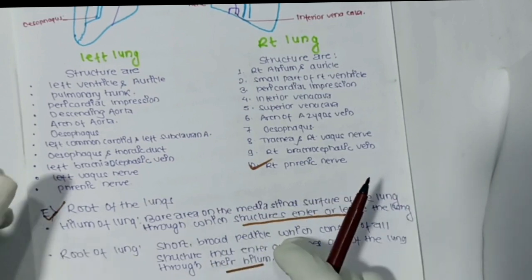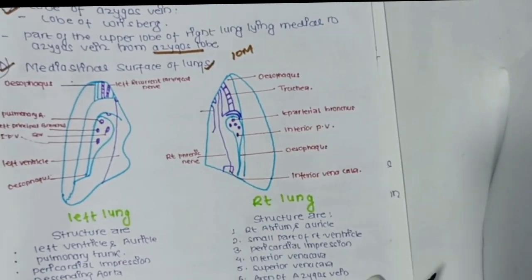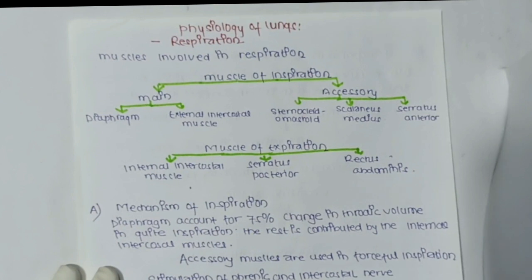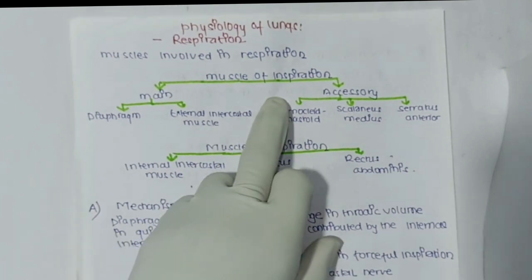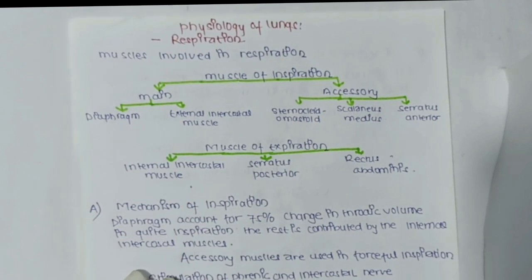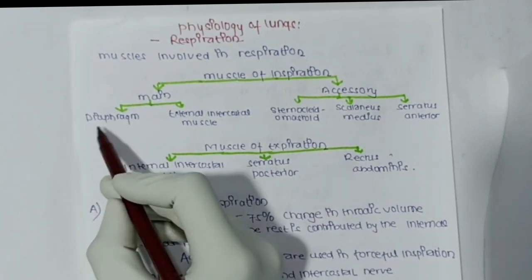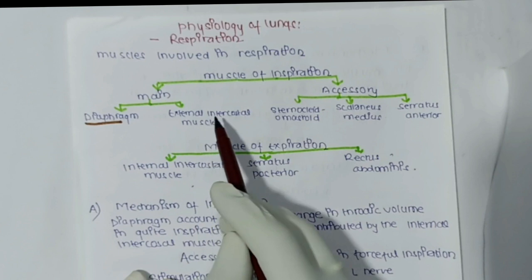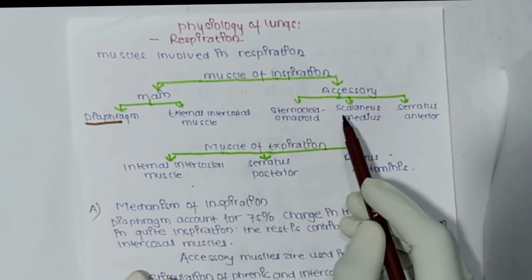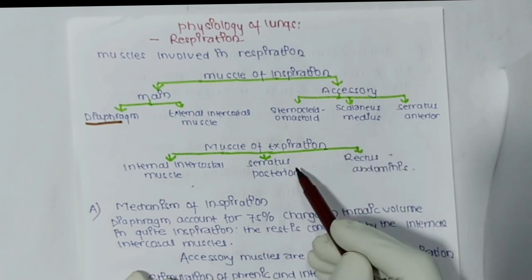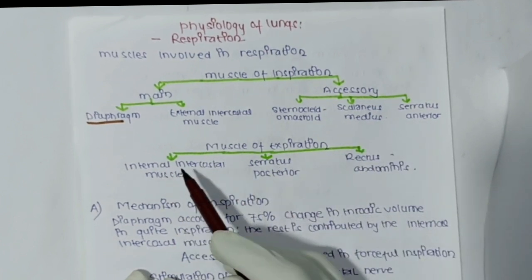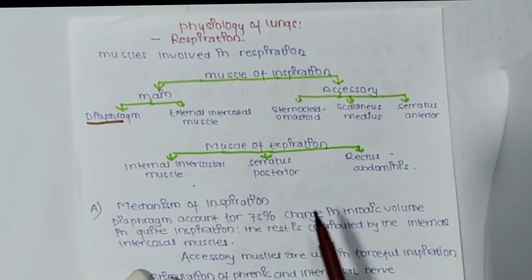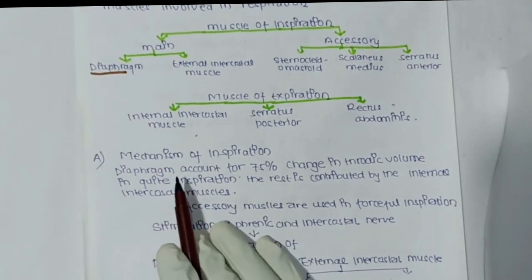Now for the physiology of lungs: respiration involves muscles of inspiration and expiration. The main muscles of inspiration are the diaphragm and external intercostal muscles. Accessory muscles include the sternocleidomastoid, scalenes, and serratus anterior. The muscles of expiration are the internal intercostal muscles, serratus posterior, and rectus abdominis.